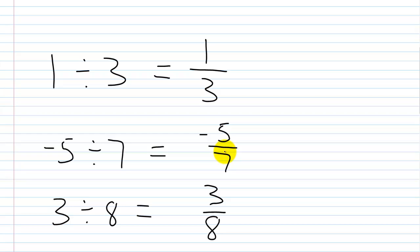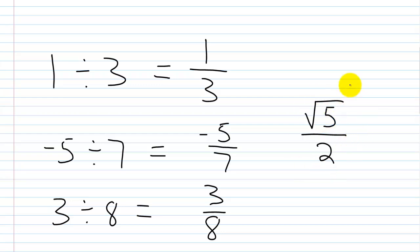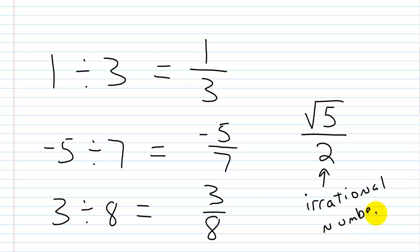Now, in pre-algebra we also talked about something called an irrational number. We're not going to go into that today, but just to refresh your memory: an irrational number is a number that cannot be formed using the quotient of two integers. So something like the square root of five over two would be irrational, because the square root of five is not an integer. All of the earlier examples would be rational numbers.